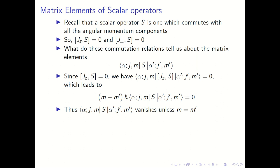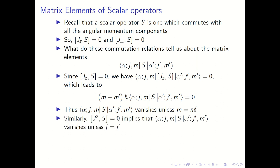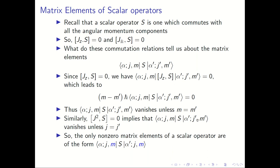Not only does S commute with j_z, it also commutes with j_x and j_y, which means it commutes with j². Repeating the same calculation starting with [j², S] = 0, we immediately get that the matrix element will also vanish unless j equals j'. So the commutation relations themselves tell us that the only non-zero matrix elements possible for any rotationally invariant scalar operator are of the form ⟨α, j, m | S | α', j, m⟩ — the angular momentum eigenvalues for j² and j_z must be the same on both sides.